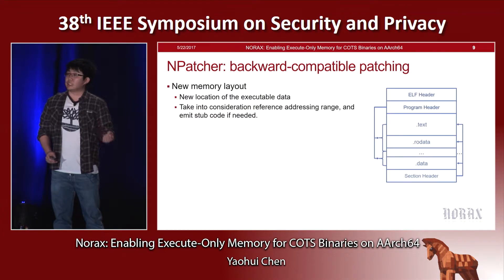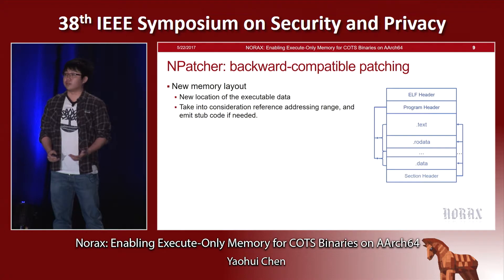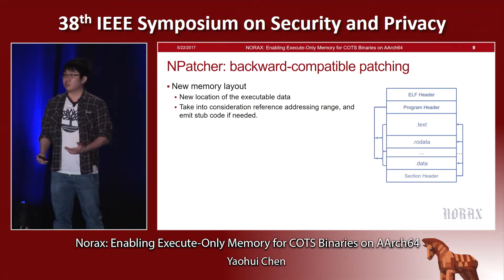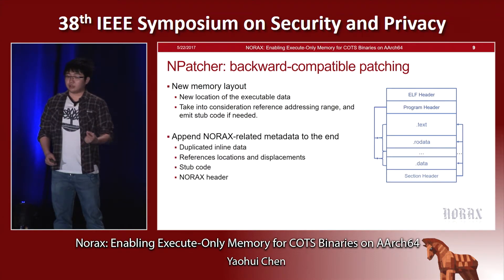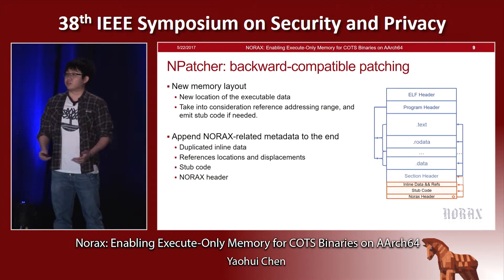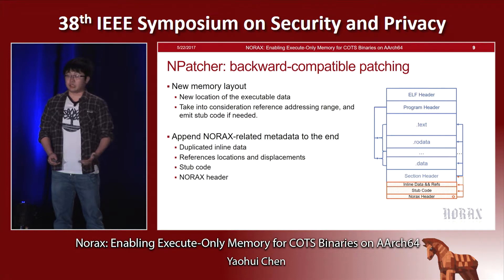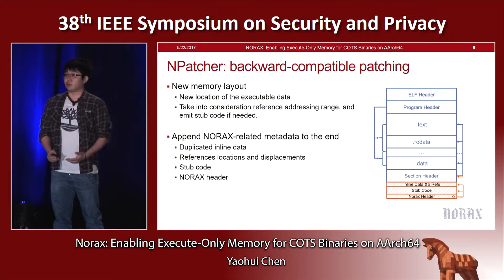This result is given to NPatcher, which calculates the new memory layout — specifically the new location of the XOM data — taking into consideration the reference address and range. It will emit stub code to help access the relocated data at the new location if necessary. NPatcher also appends NURX-related metadata to the end of the ELF to ensure backward compatibility. This metadata includes the duplicate inline data, the reference locations and displacement, the stub code, and finally the NURX header that tells Unloader where to locate this metadata.